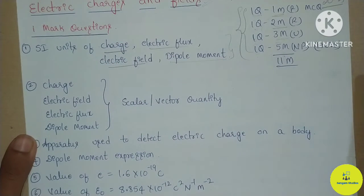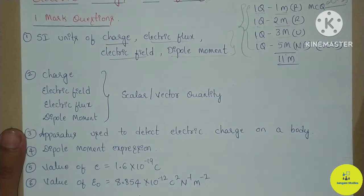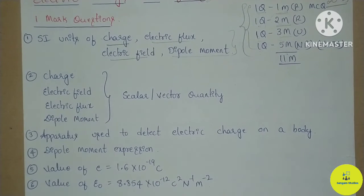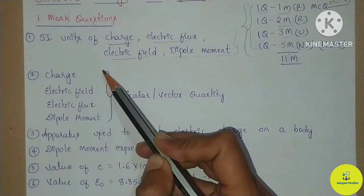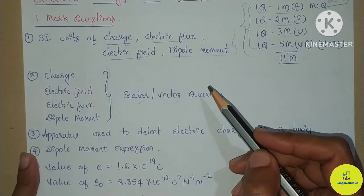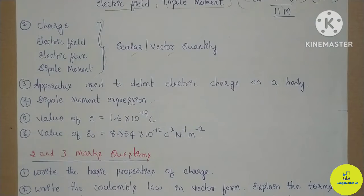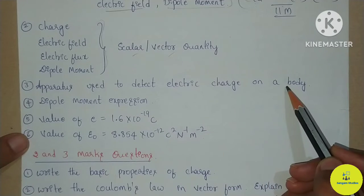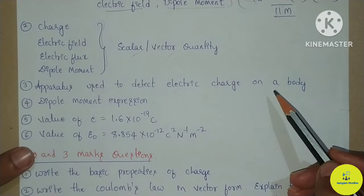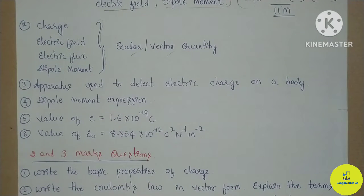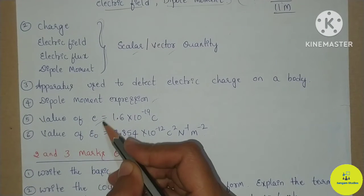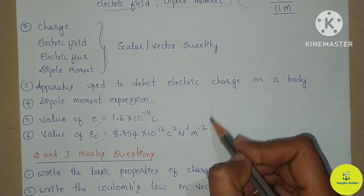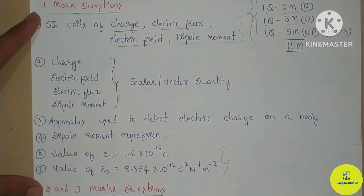These four terms — charge, electric field, electric flux, and dipole moment — need to be known for their SI units. They also need to be classified as scalar or vector quantities. You should know which instrument is used to detect electric charge. The dipole moment expression is required, along with the value of e and value of epsilon naught — very, very important. These are the one-mark important questions.